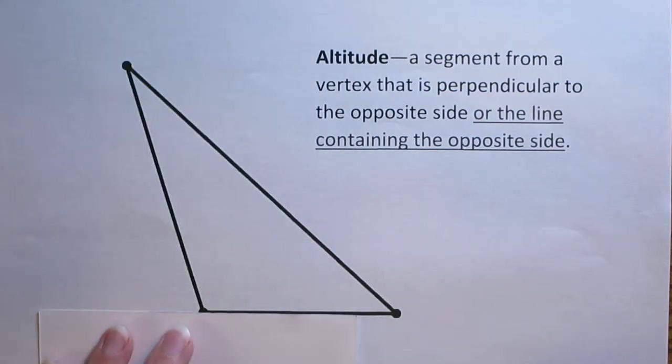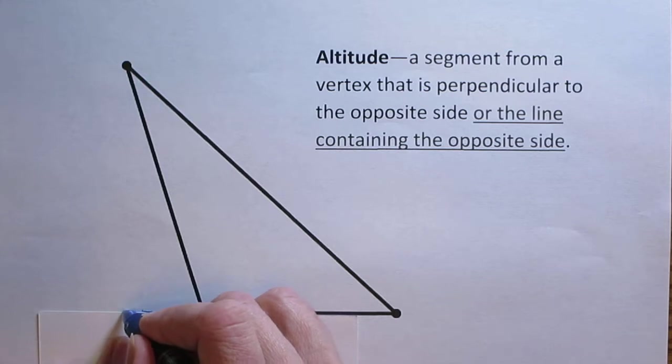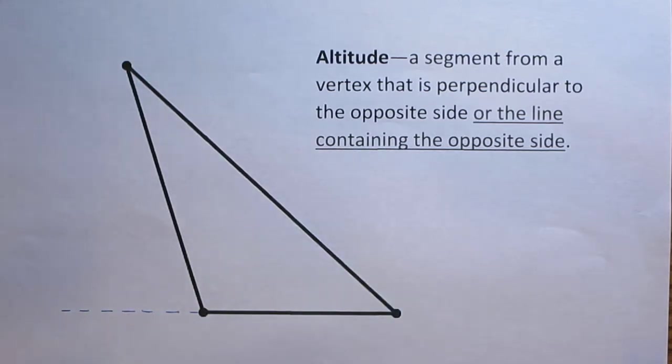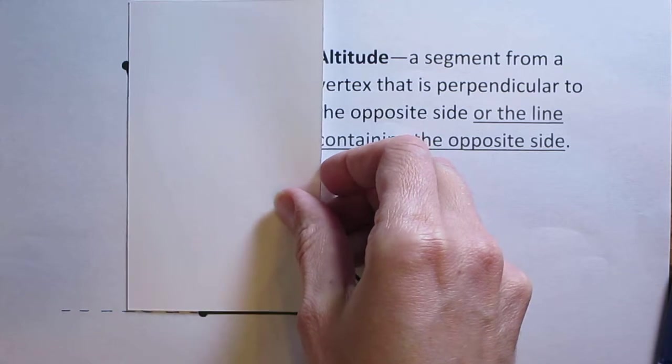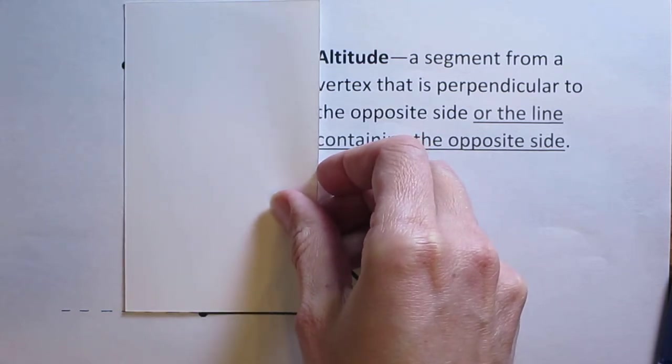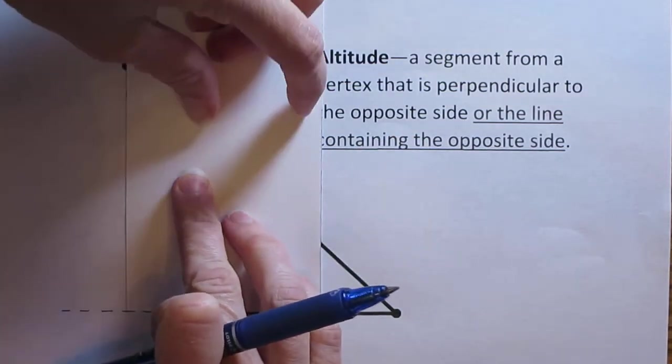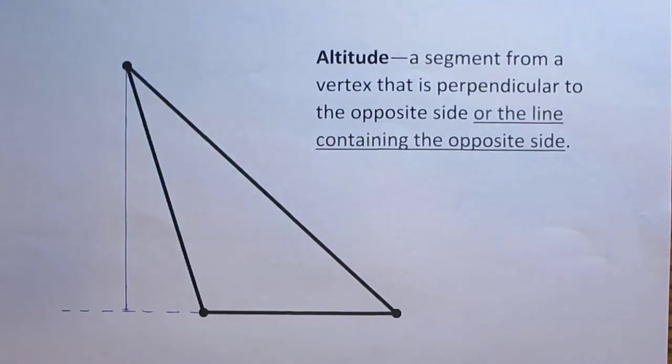So what we do in a case like this is we extend the line containing that side of the triangle. Now I can take my note card and slide it across the triangle, slide it across that bottom side until it meets up with that vertex. And once it meets up with that vertex then I'll draw in my altitude. There is the altitude from this vertex to the opposite side in the line containing the opposite side.